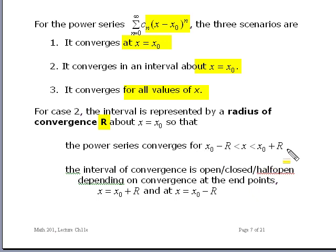At the end points of x₀ minus R and x₀ plus R, that has to be investigated separately. It could converge at either one of those end points, at neither of those end points, or at only one of the end points.